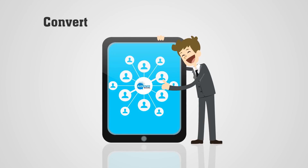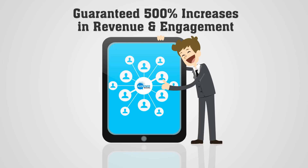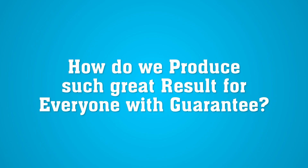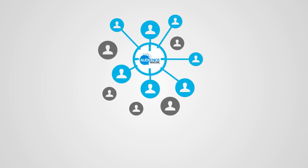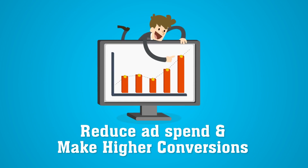Audience Social converts 80% of the traffic that leaves your site or offers within minutes. You'll be guaranteed 500% increases in revenue and engagement for every site visitor. How can we be so confident? Because with Audience Social you're only retargeting action takers — visitors that clicked your link — so you can reduce ad spend and make drastically higher conversions.